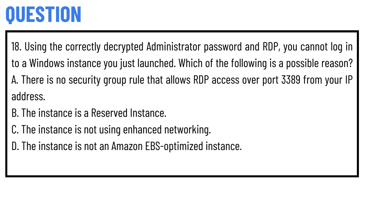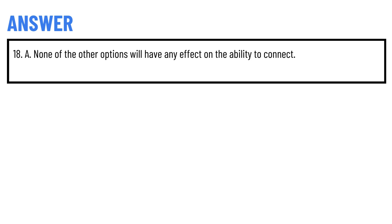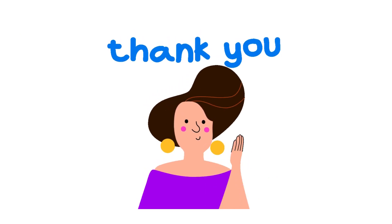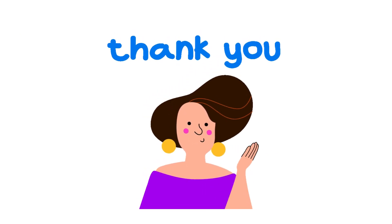Option D: the instance is not an Amazon EBS optimized instance. The correct answer is Option A. None of the other options will have any effect on the ability to connect. That's the correct answer to the question.